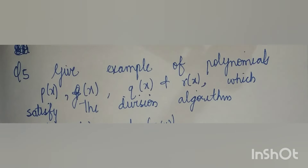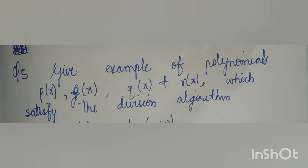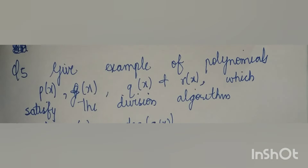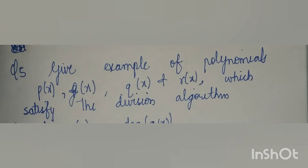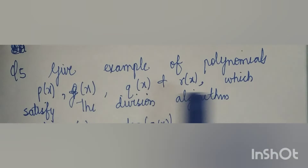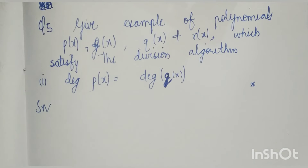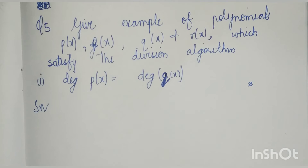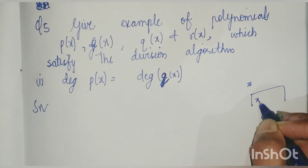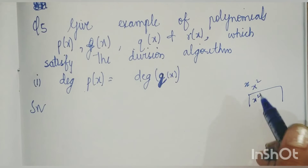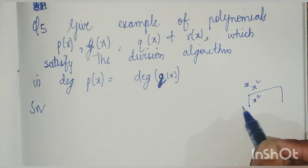Our next question asks: give examples of polynomials p(x), g(x), q(x), and r(x) satisfying the division algorithm, where p(x) is dividend, g(x) is divisor, q(x) is quotient, and r(x) is remainder. Part 1: degree of p(x) equals degree of q(x). This means the quotient has the same degree as the dividend when the divisor is a constant.